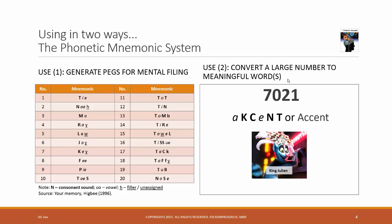And the other way of using the Phonetic system is basically you can take any large number and convert it into a meaningful word on the fly. For example, for the number 7021, the corresponding consonant sounds would be K, C and T. And by adding vowels A and E, you get the sound of the word accent. And for the word accent, you can associate any image that you feel connected to the word accent.